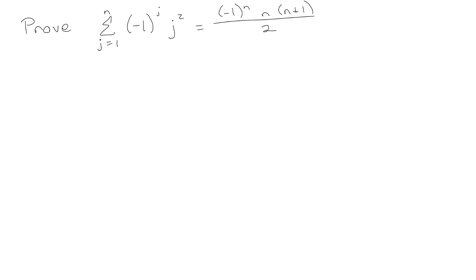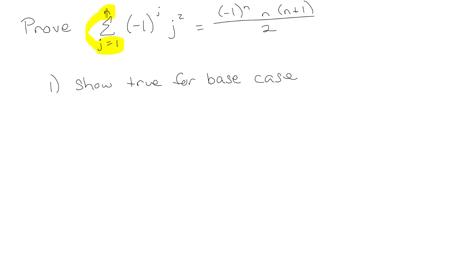So let's look at this example and prove it by induction. The first step is to show that it's true for some base case. In our case, j is going from 1 to n, so our base case would be n equals 1, because that would be just the single term with j going from 1 to 1.